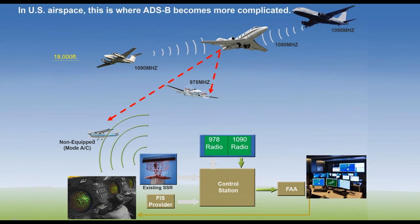Because of the dual frequency band, things get complicated. A Citation with ADS-B in on 1090 can see other 1090 aircraft, but cannot directly see a 978-equipped aircraft or a non-participating mode C aircraft. And the 978 guy also can't hear the 1090 broadcasts directly. This is where ADS-R and TIS-B come in to solve the communication issue.